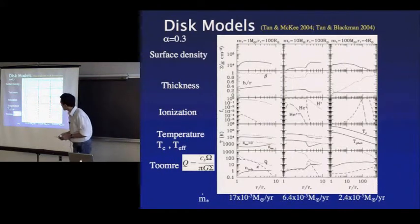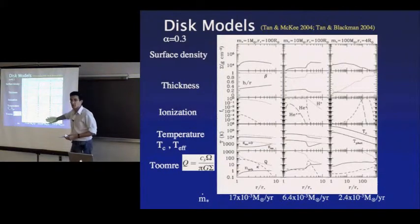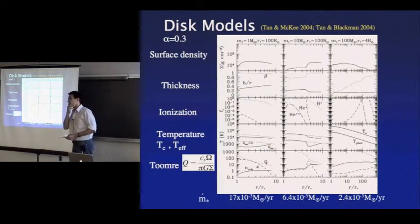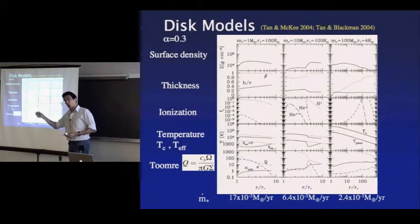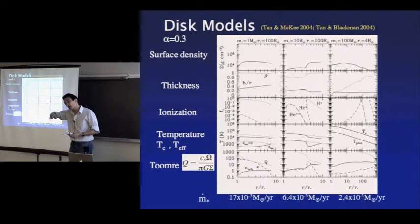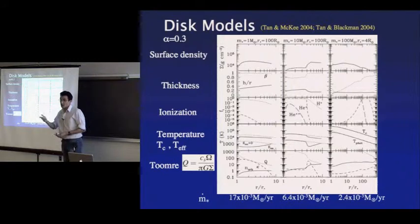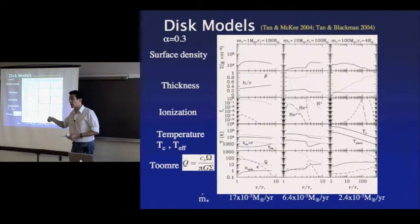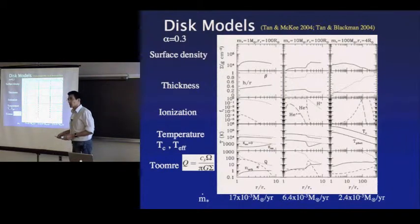The disk is eventually going to become optically thin — we have not modeled that phase. In reality we argue the viscosity is going to be lower than 0.3: the disk mass will have to build up to a higher level until it becomes mildly self-gravitating, but then that value of viscosity is sufficient to drain the disk at a rate faster than the supply rate.